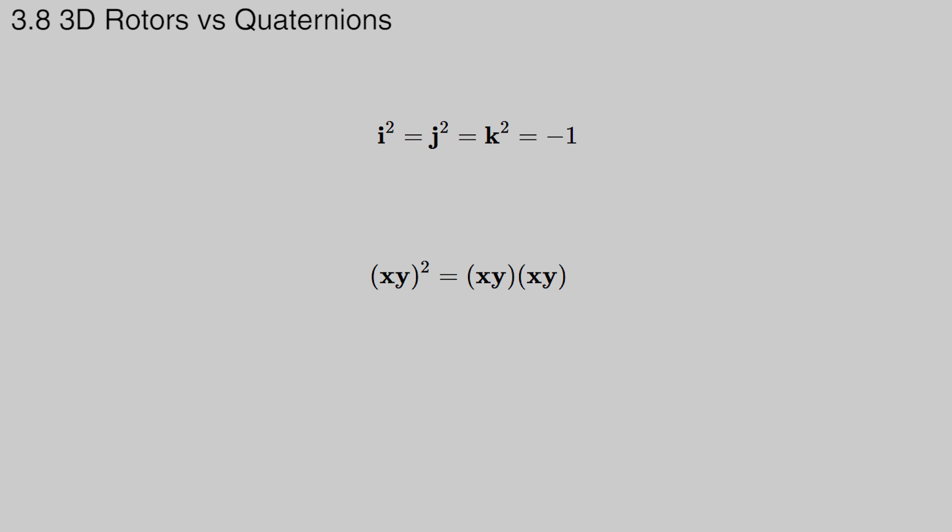For example, the basis bivectors squared are negative 1, just like the basis quaternions. Multiplying two bivectors together gives a third bivector, but this is basically trivial, and we don't have to remember how i times j equals k. These properties are a consequence of the geometric product instead of appearing out of thin air.